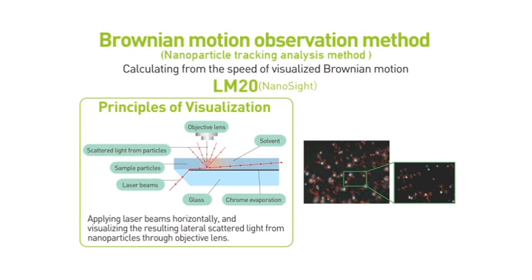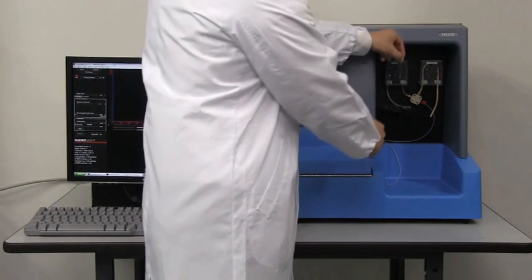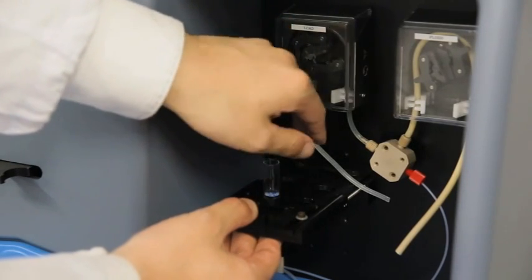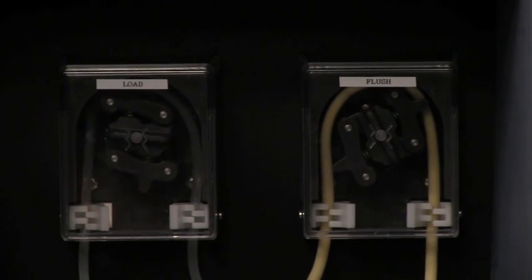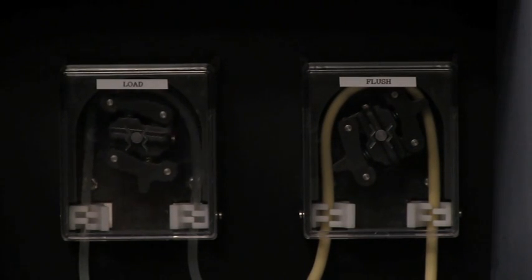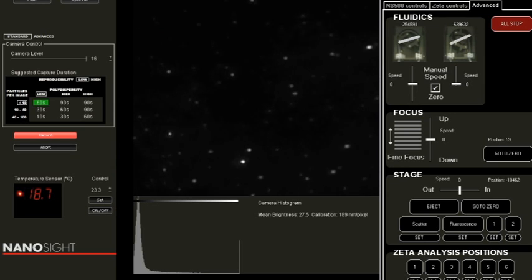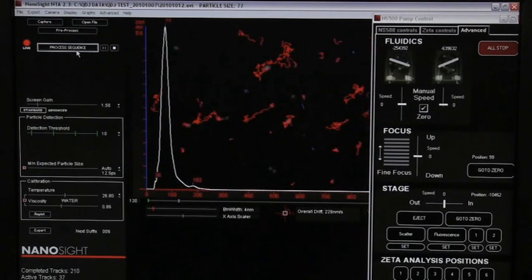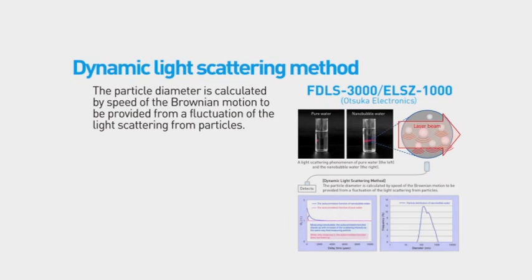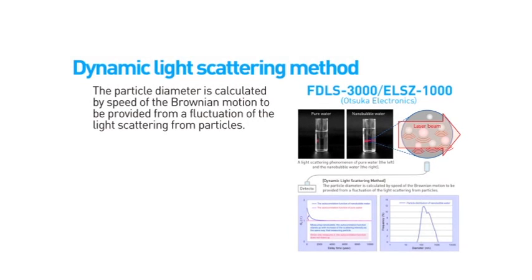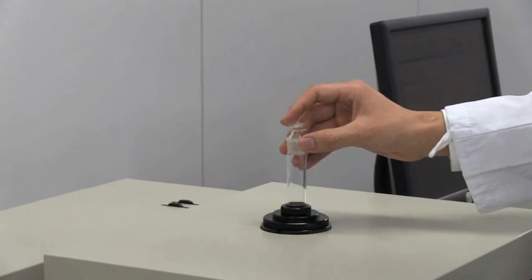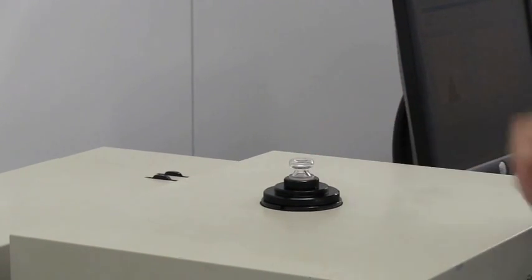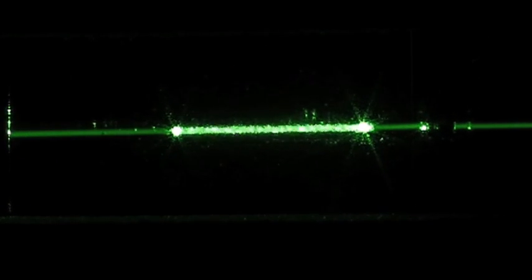These methods include a Brownian motion observation method that tracks the bubbles' Brownian motion, and a dynamic light scattering method that irradiates the ultra-fine bubbles dispersed within a liquid with a laser, monitors the fluctuation of the light scattered due to the bubbles' Brownian motion, and then calculates the bubble size distribution using a Stokes-Einstein equation.